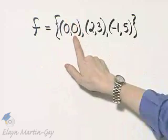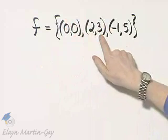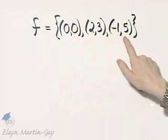So zero is paired with zero only, two is paired with three only, and negative one is paired with five only.